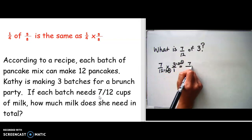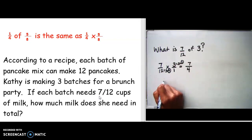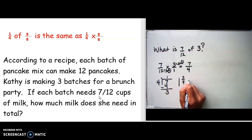Seven times one is seven. Four times one is four. And let's divide this out, since our numerator is greater than our denominator. Four times one is four. Seven minus four is three. So one and three-fourths cups. One and three-fourths cups of milk.